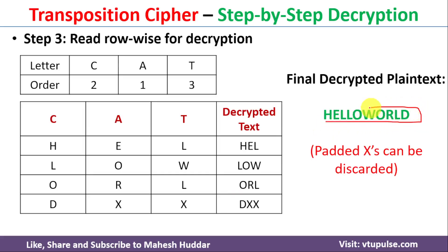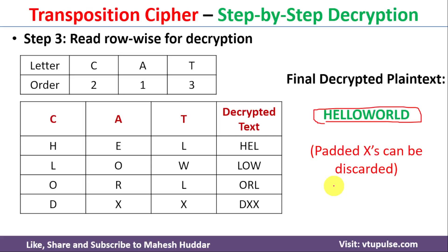This is the final decrypted plain text. We can remove the X-X since we had padded those, so we discard them. This is how we find the encrypted and decrypted message with the help of a transposition cipher. I hope the concept of transposition cipher is clear. If you like the video, do like and share with your friends. Press the subscribe button for more videos and the bell icon for regular updates. Thank you for watching.